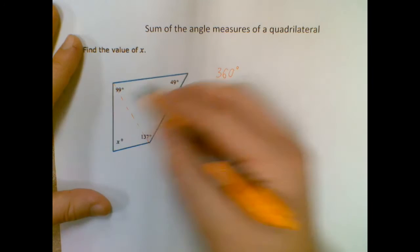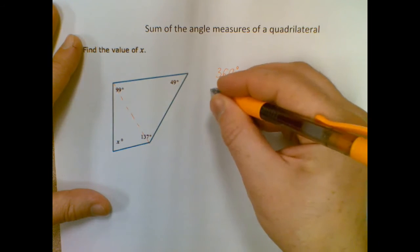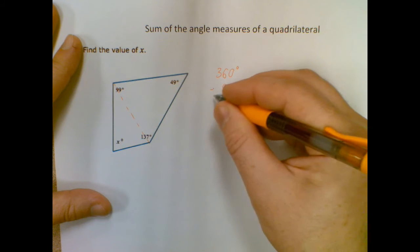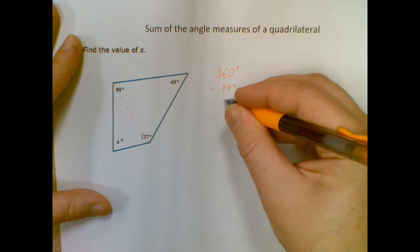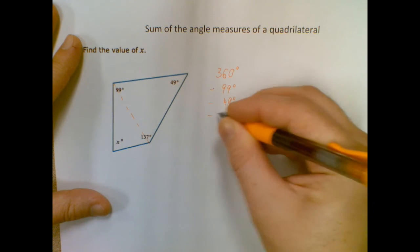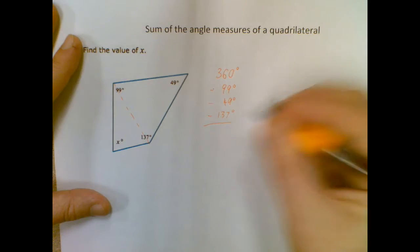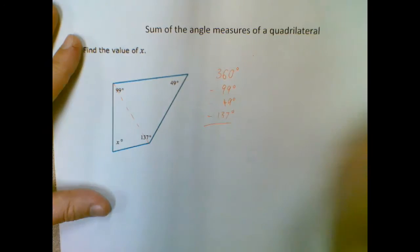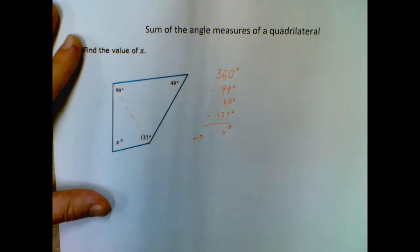So I have 360 degrees, and I just need to subtract off all of the ones that I... that's a terrible notation. But I'm going to subtract off all of the ones I have, and whatever I'm left over with will give me the one I'm looking for.